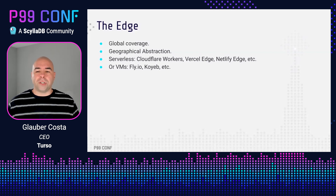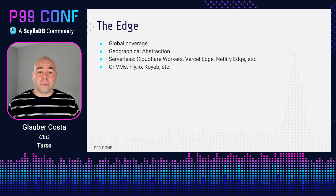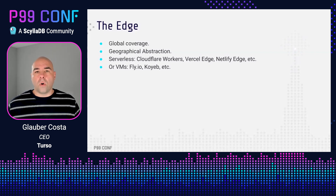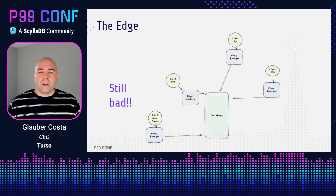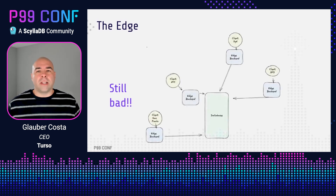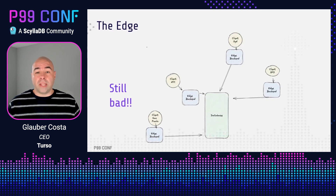A common misconception is that the edge is necessarily serverless, but that is not true. There are edge serverless providers like Cloudflare Workers, Vercel Edge, Netlify Edge, among others. But there are also edge providers that allow you to run VMs, like Fly.io, Coyab, Unicraft, among others as well. But moving code is easy — code weighs nothing. For things like simple middleware that never accesses data and has no state, code at the edge is the final solution. For anything that accesses data, to really lower latencies, you need to make sure that both code and data are at the edge.